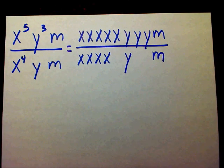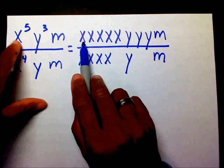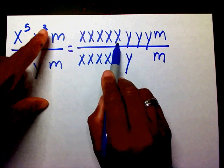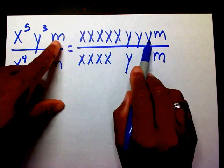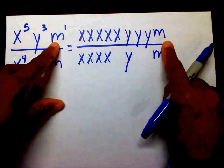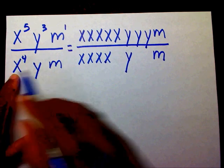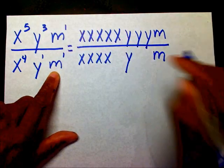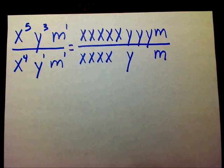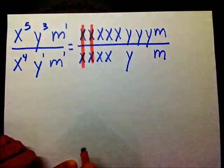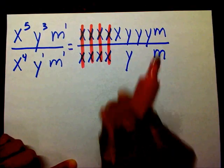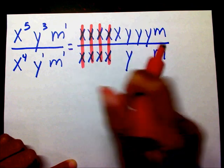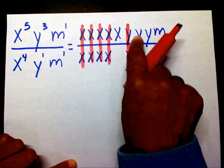Now let's cancel variables out. The four x's in the denominator cancel with four of the five x's in the numerator, leaving one x that stays. My y in the denominator cancels with one y from the top, but I still have two y's left in the numerator with nothing to cancel. And my m's cancel each other out.